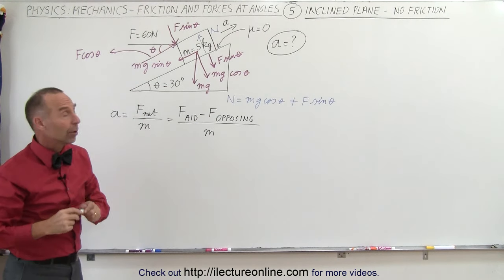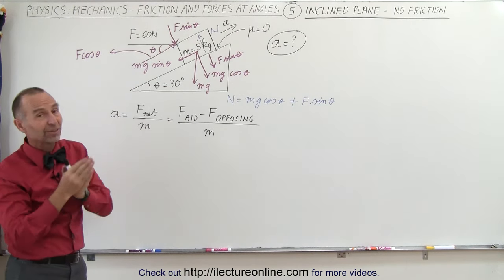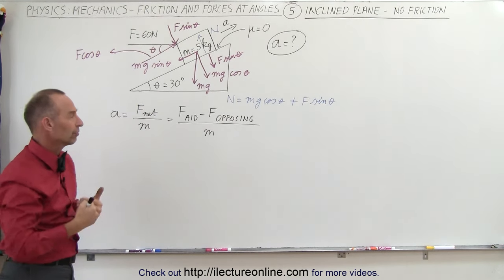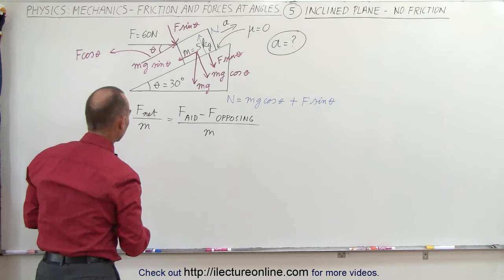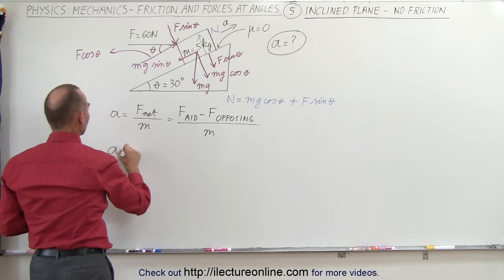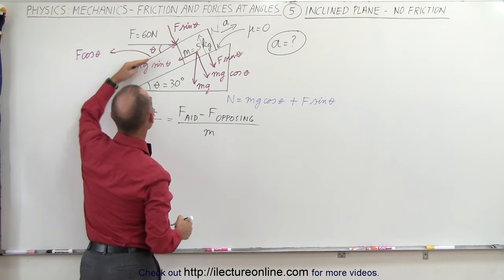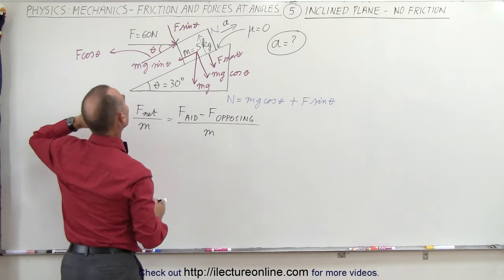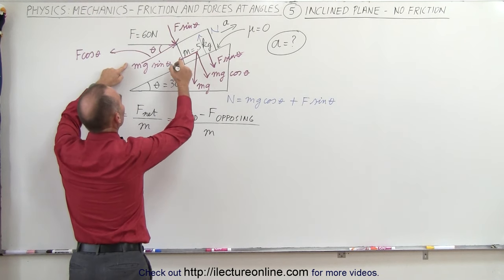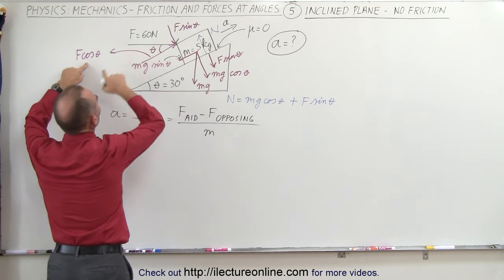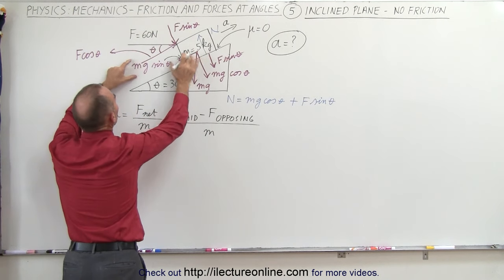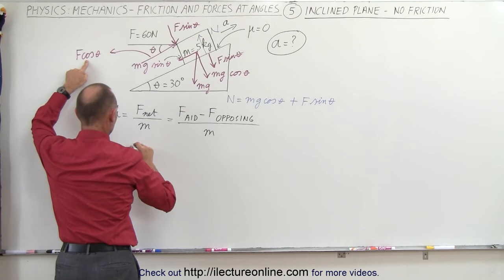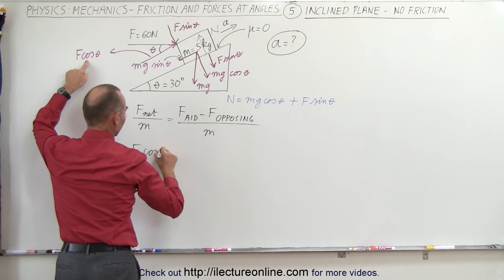The net force can be defined as all forces aiding the acceleration minus all forces opposing the acceleration, divided by the mass. Aiding means the force is in the same direction as the presumed acceleration; opposing means the force is in the opposite direction. The force aiding acceleration — not mg sine theta, that belongs to gravity — the force pushing the block up the incline is F times the cosine of theta.